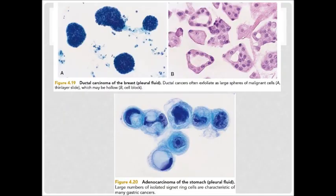The above image is the cells of breast ductal carcinoma in pleural fluid. The bottom image is the cells of stomach adenocarcinoma in pleural fluid. The appearance of signet ring cells are unique characteristics in breast and stomach cancers.